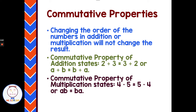We're going to start with the commutative properties. Commutative properties have to do with changing the order of numbers when we either add or multiply, and we get the same result. For example, the commutative property of addition says 2 plus 3 is the same as 3 plus 2, or A plus B equals B plus A. The commutative property of multiplication: 4 times 5 gives the same answer as 5 times 4, or AB equals BA.